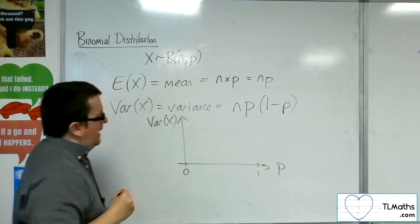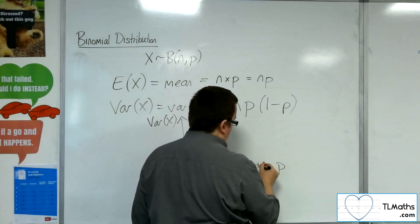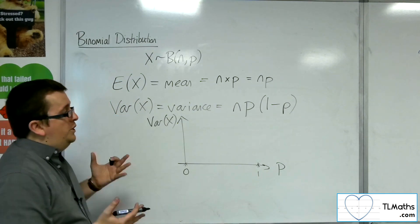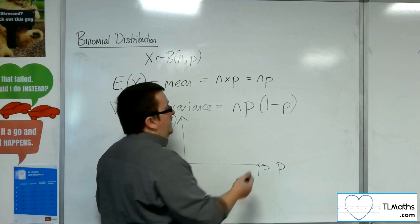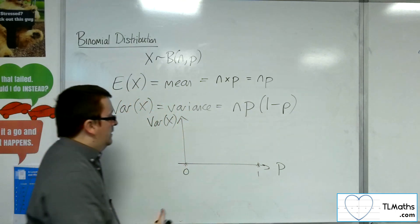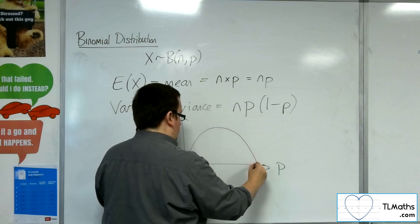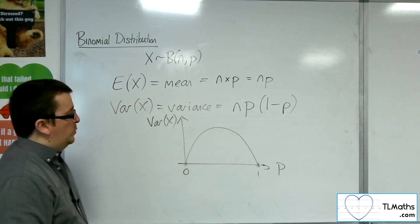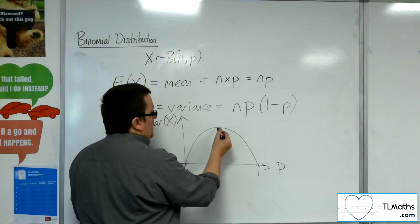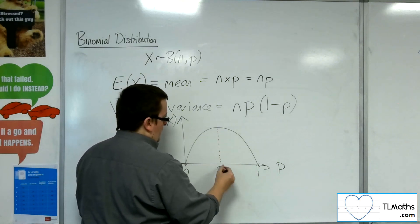And when p is 1, you get 1 take away 1, which is 0. So in between that, you've got a quadratic. p times 1 minus p will get you a quadratic, a minus p squared. So you're going to have a parabola, symmetric, between. As the probability is continuous, the highest point will be halfway at 0.5.